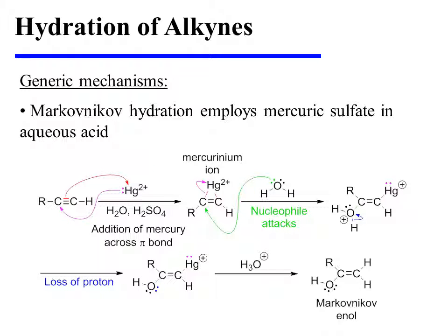Let's consider mechanisms for both of these processes, beginning with the Markovnikov hydration of a terminal alkyne, which employs mercuric sulfate as a source of the mercuric ion. The mercuric ion draws the weakly nucleophilic terminal alkyne into reaction.